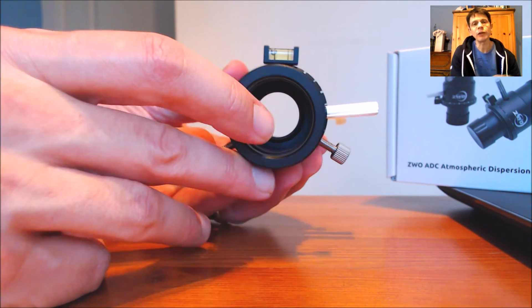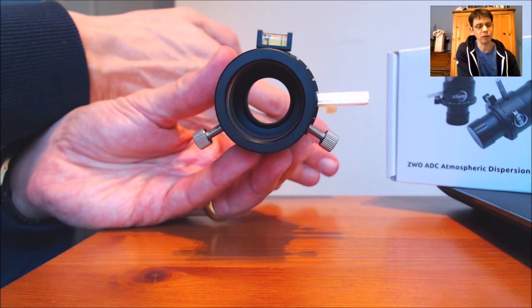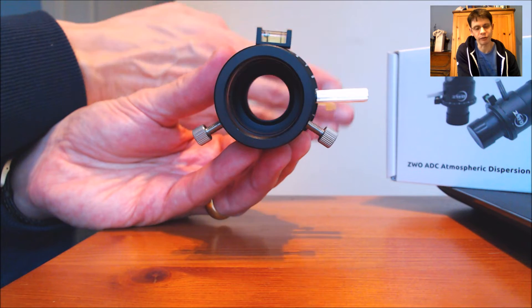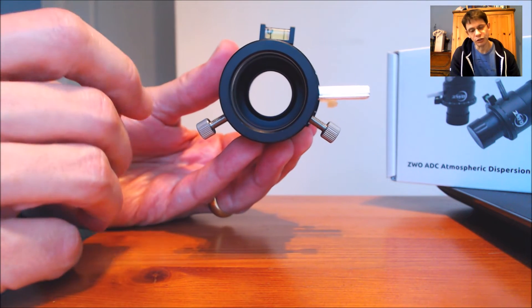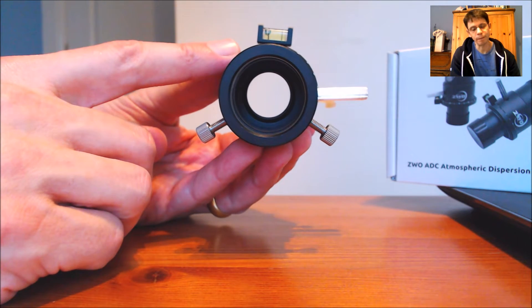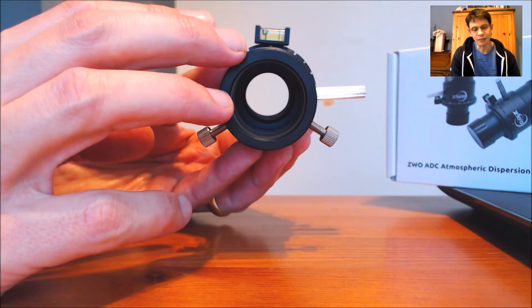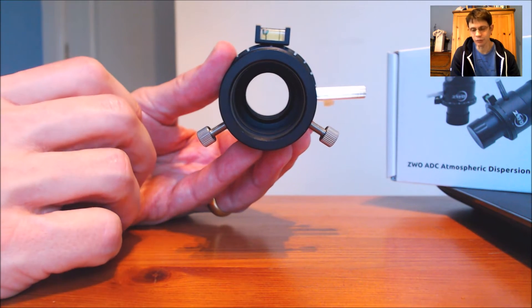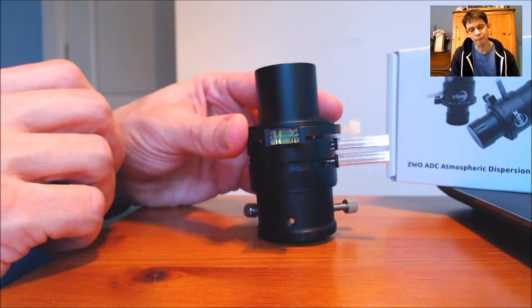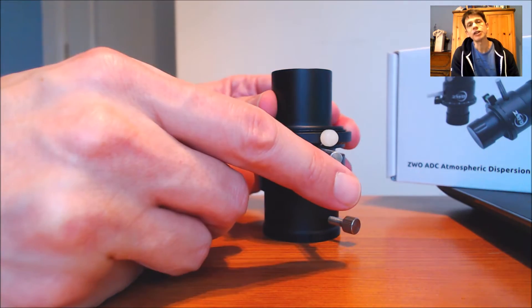It looks like we've paid quite a bit of money for not very much because you can see straight through it. But it turns out that there are actually two prisms inside the unit and the correction that it applies is by rotating these prisms relative to each other. And it does that by means of these two levers.